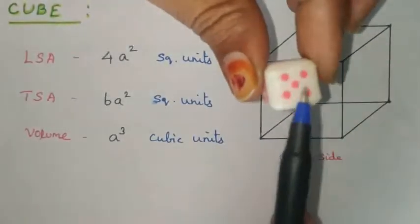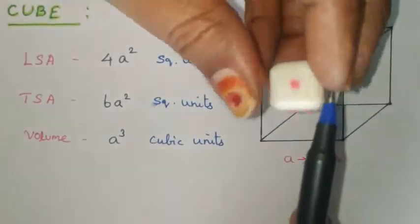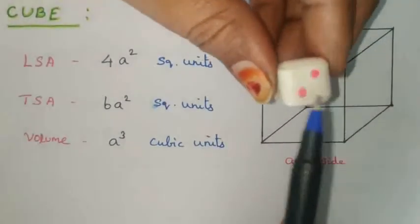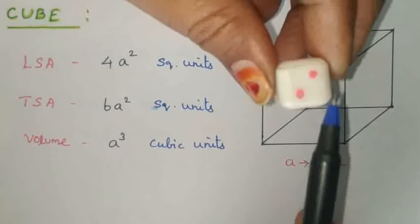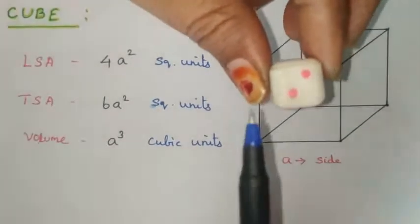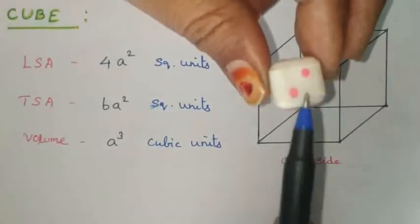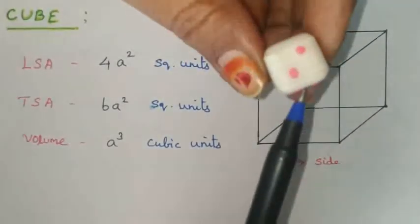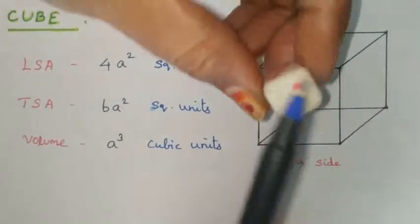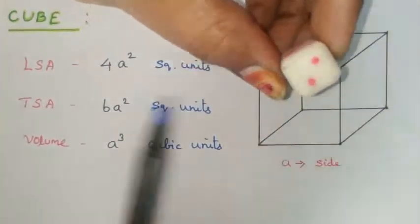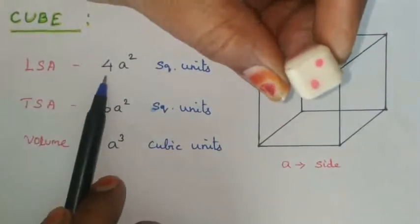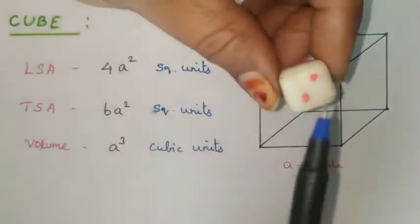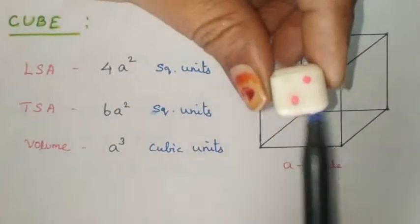For the lateral surface area of a cube, we consider 4 sides: 1, 2, 3, 4. The lateral surface area (LSA) is 4a². The total surface area (TSA) — we add the top and bottom sides as well, making 6 sides total, so TSA is 6a².